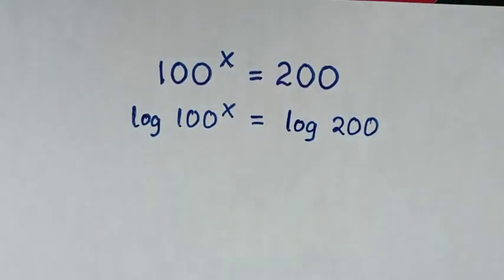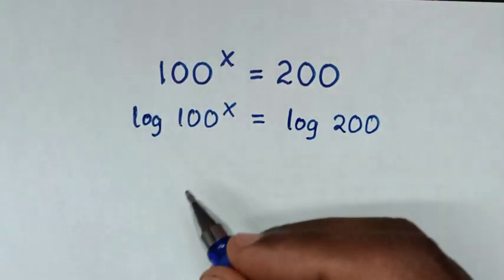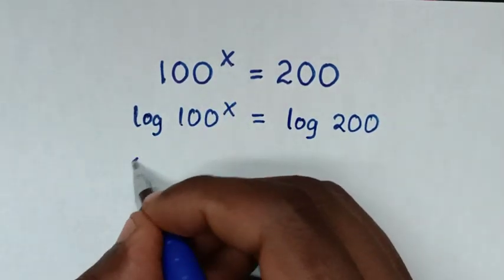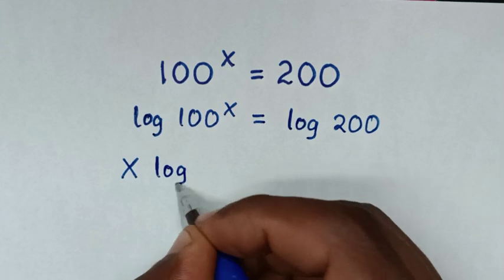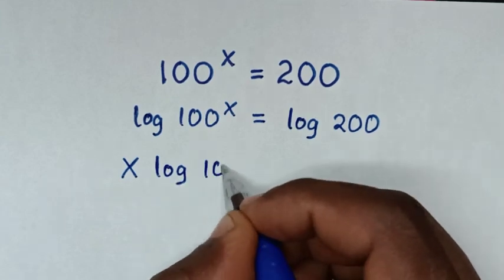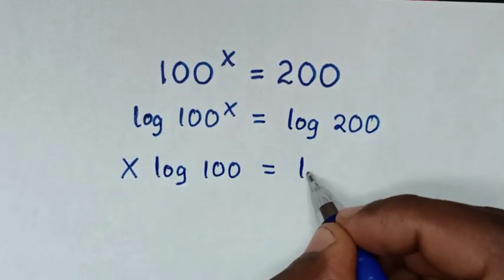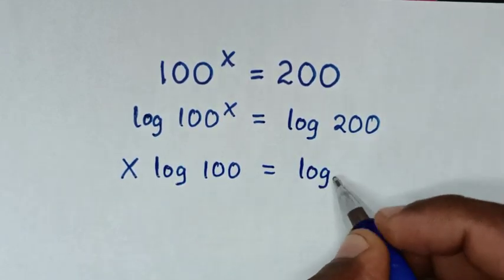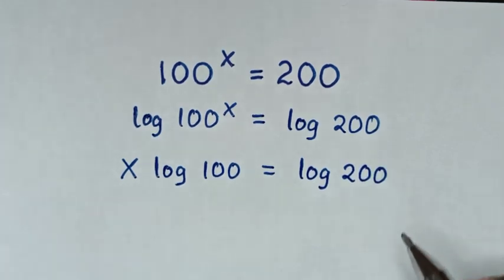Then in the next step, this power of x will move to the front. So it will be: x times log of 100 is equal to log of 200.